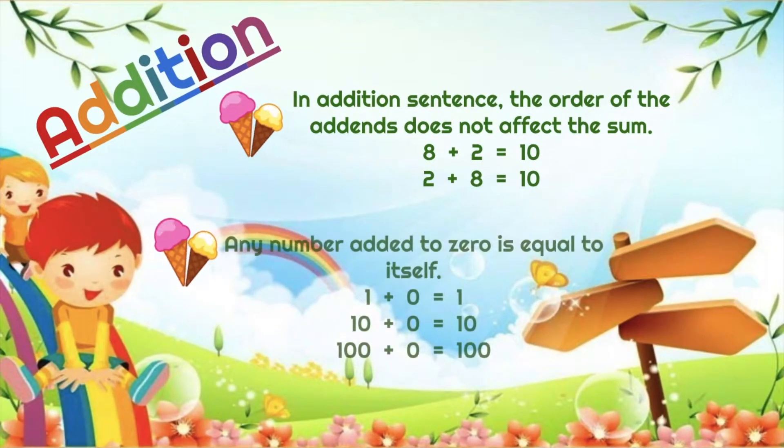Lastly, any number added to zero, no matter how small or large that number is, will always equal itself.